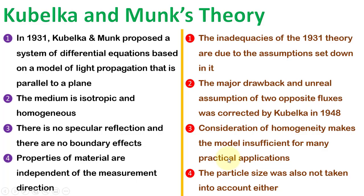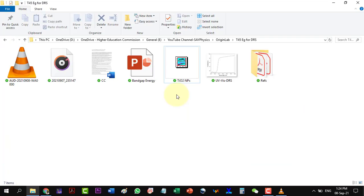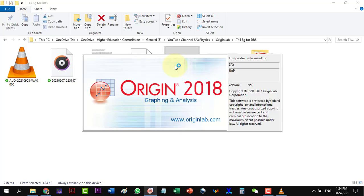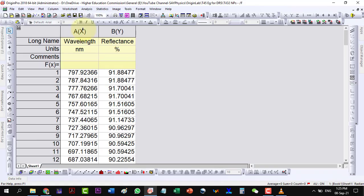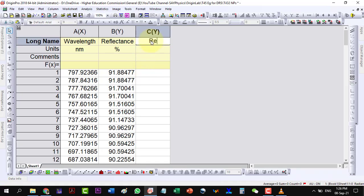Let us open the DRS data of titanium dioxide nanoparticles. The first column shows the wavelength in nanometer, while the second column shows the percent reflectance. The very first thing we should do here is to normalize the reflectance to 1 by dividing it by 100.